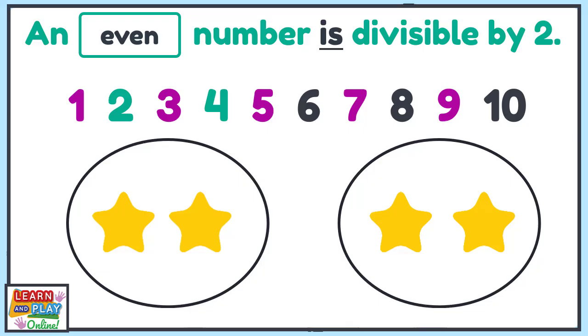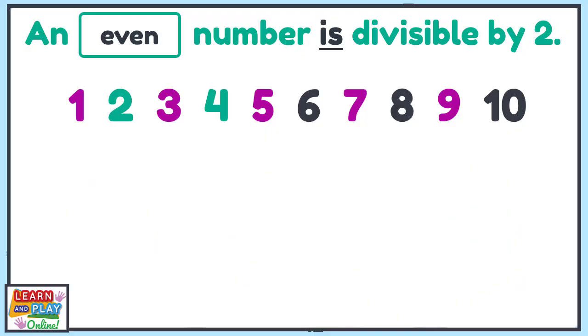Can you guess what the other even numbers are? That's right! The other numbers that are even numbers are 6, 8 and 10. The number 10 is a special number because it ends in 0. This means that every number that ends with a 0 are also even numbers.